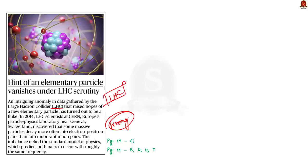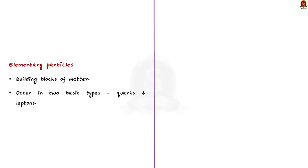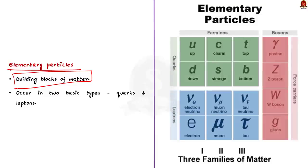What is an elementary particle? Elementary particles are the building blocks of matter. All matter around us is made of these elementary particles only. The interesting fact is these elementary particles occur in two basic types called quarks and leptons. Each of these groups consists of six particles which are related in pairs or generations.